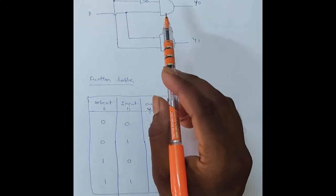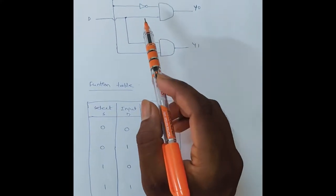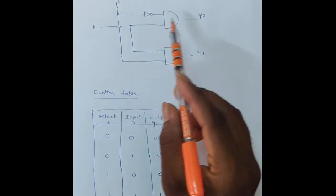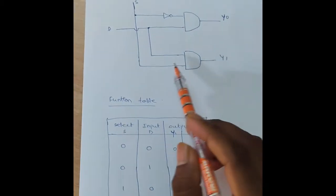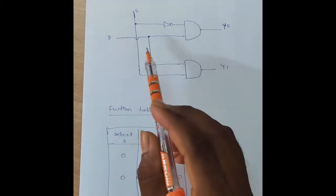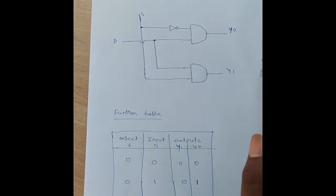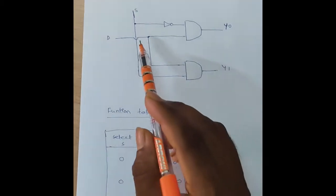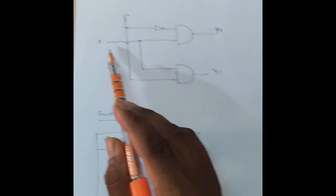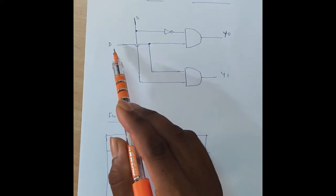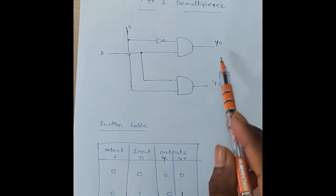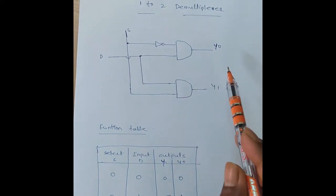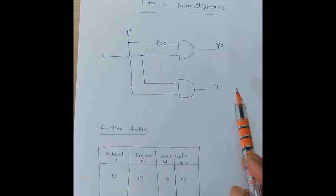Hi students, today's experiment is the one-to-two D demultiplexer. This is the circuit diagram of the one-to-two D demultiplexer. It has one input D and two outputs: Y0 and Y1.